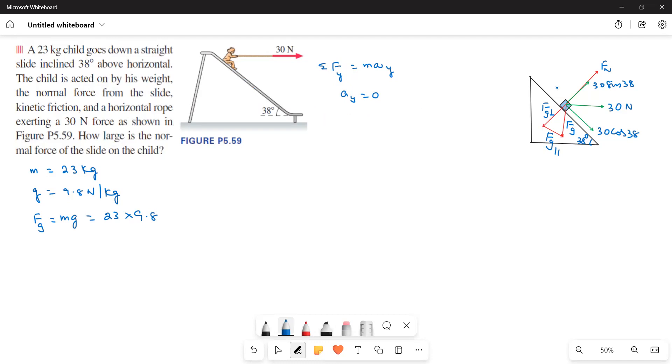What are the Y direction forces? FN minus FG perpendicular plus Y component force of the rope. So that is 30 sin 38 is equal to zero or FN is equal to FG perpendicular minus 30 sin 38 degrees.